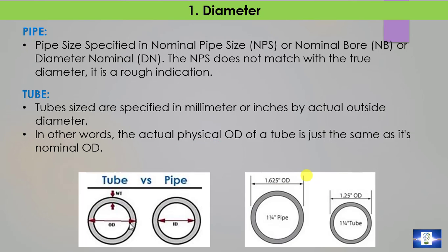Point 1: Diameter. For the case of pipe, pipe size is specified in Nominal Pipe Size (NPS), Nominal Bore (NB), or Diameter Nominal (DN). This NPS does not match the true diameter — it is just a rough indication. For the case of tube, tube size is specified in millimeters or inches by actual outside diameter. The actual physical outer diameter of a tube is the same as its nominal outer diameter.